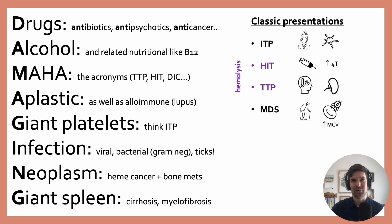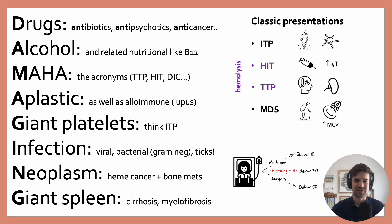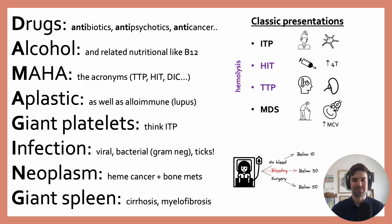Another question about thrombocytopenia is when should we transfuse platelets? In general, if the patient is not bleeding, you use a platelet threshold of less than 10. If they are actively bleeding, then typically at a threshold of 30 you would transfuse. And for general surgery — this does not include neurosurgical procedures — generally if the platelet count is less than 50.